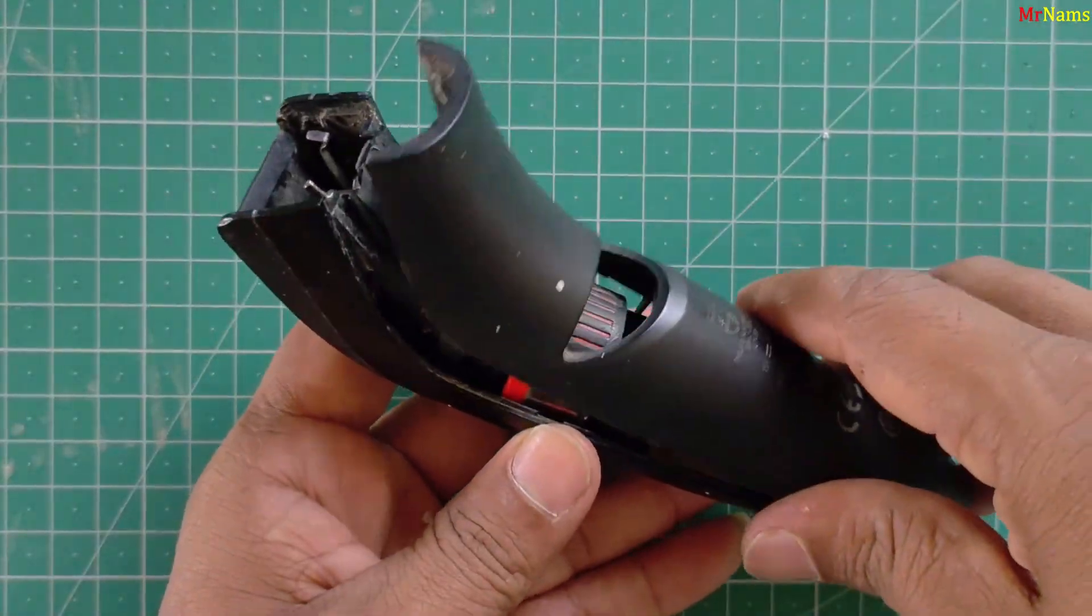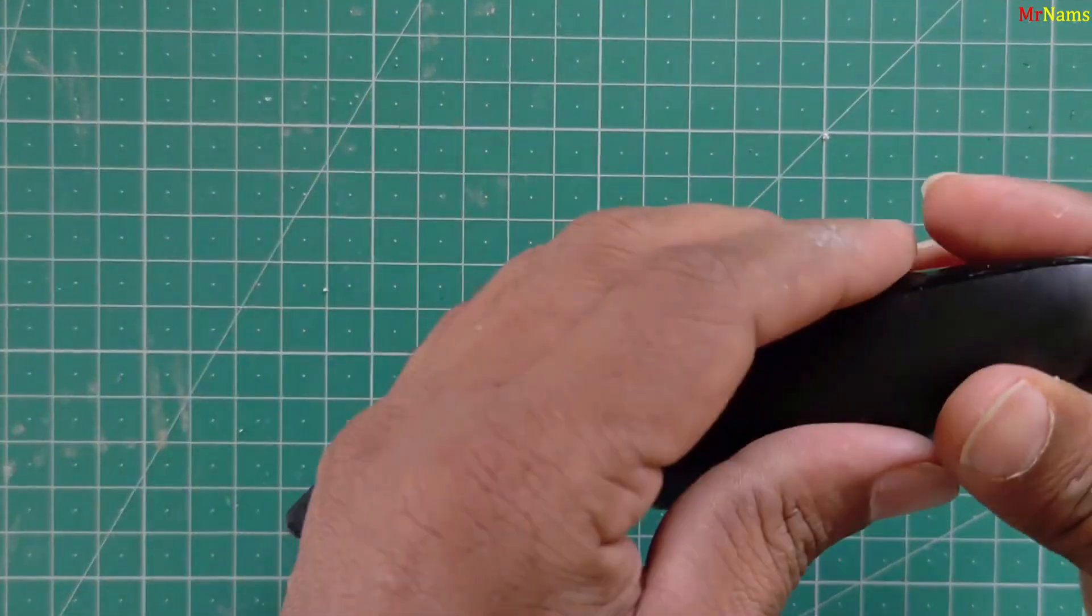Step 6. Reassemble the trimmer. Snap the outer cover back into place.